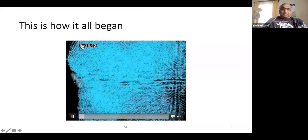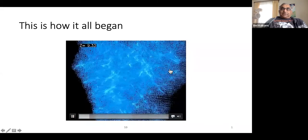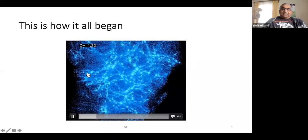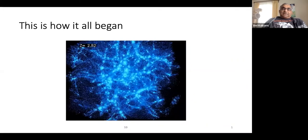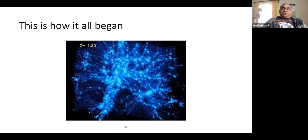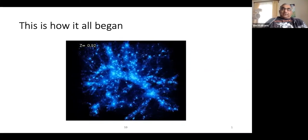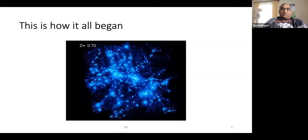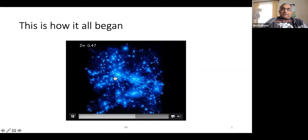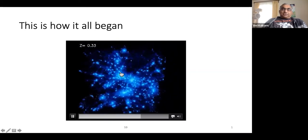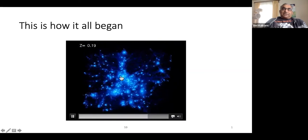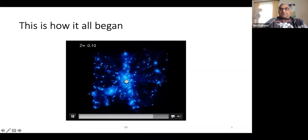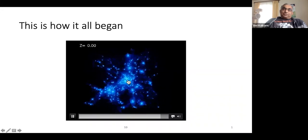The universe was actually very simple when it began. In a two-dimensional representation, from one part of the universe to another, the matter density and energy density were the same to one part in 10^5. It is those small fluctuations which, thanks to long-range gravity, gave rise to the gradual condensation of baryonic and dark matter, leading to stars, groups of stars, galaxies, clusters of galaxies, and so on.